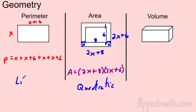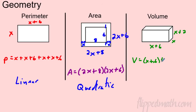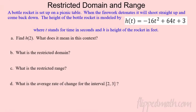Perimeter is degree one — linear. Area is degree two — quadratic. What about volume? Since volume involves three dimensions multiplied together — like x, (x + 6), and (x + 2) — you get a cubic function. That's why we talk about cubic centimeters. Volume problems give us cubic functions.